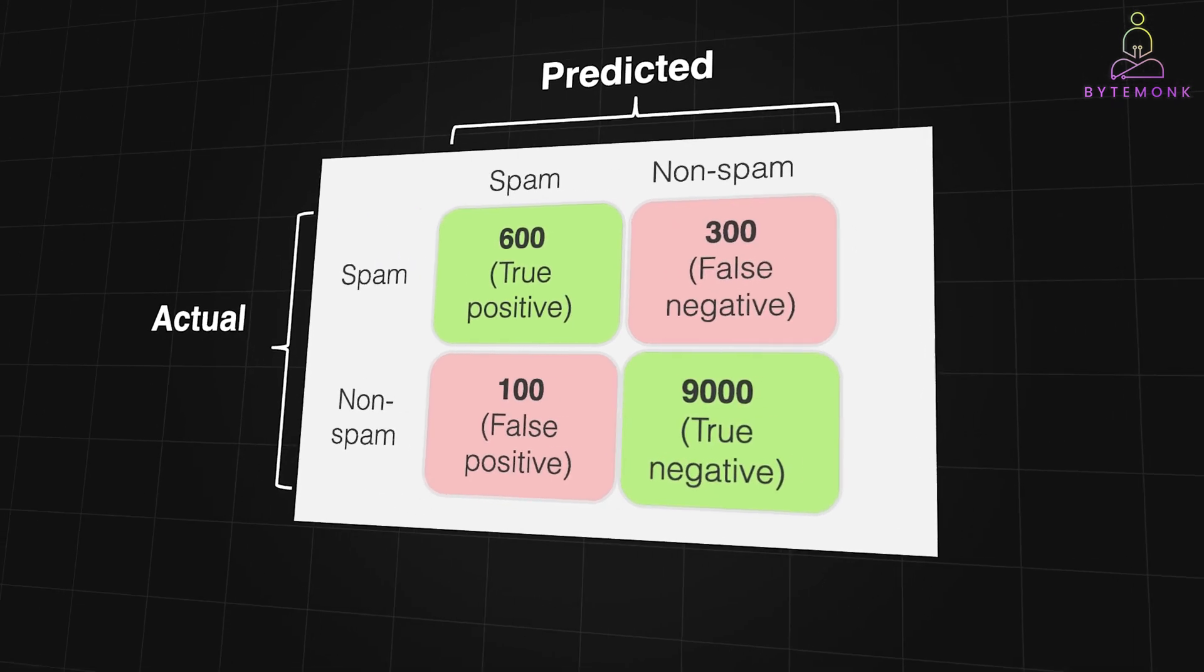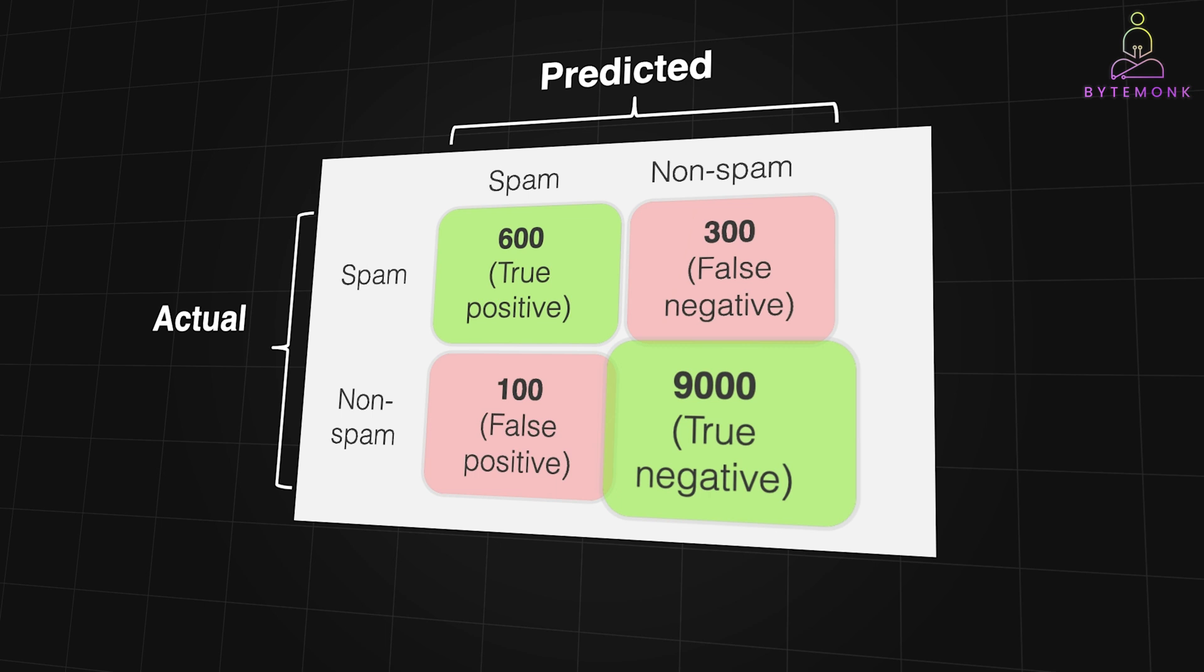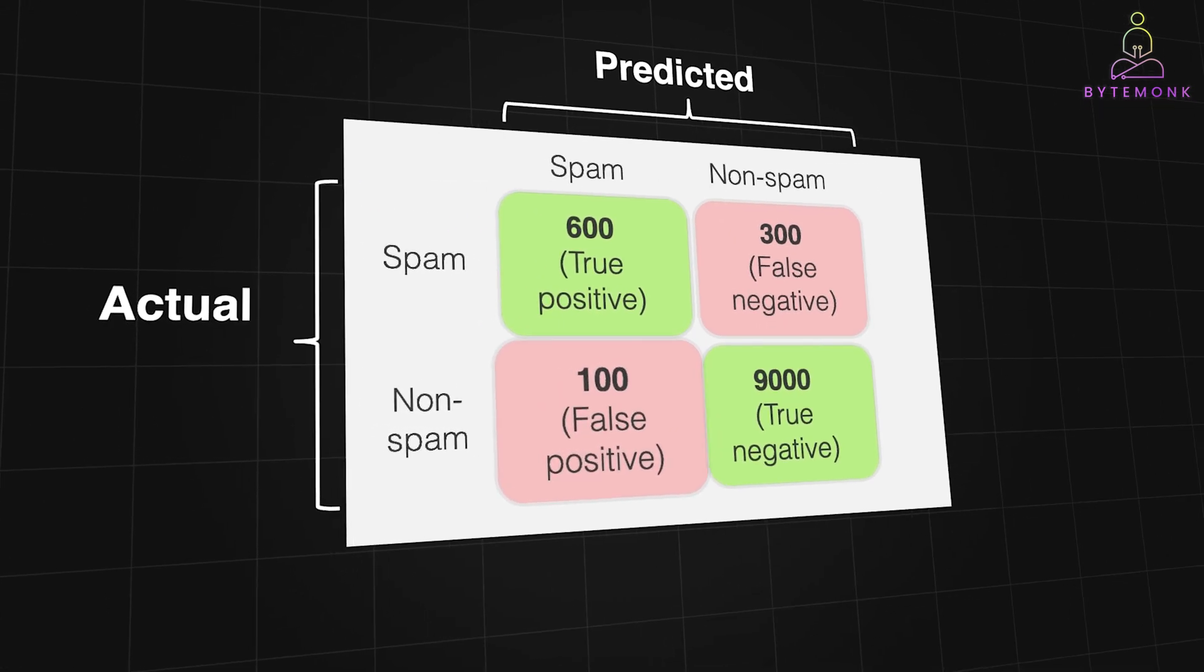TN is the bottom right green corner of the matrix. It shows the number of correctly identified negative cases, where the actual label is negative and the model correctly predicted it as negative. In spam detection, this is the number of correctly predicted non-spam emails. FP shows the number of incorrectly predicted positive cases. These are the cases where the actual label is negative but the model predicted it as positive. These are false alarms, also known as type 1 errors. In spam detection, this is the number of emails incorrectly labeled as spam.